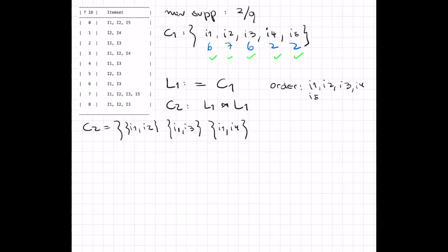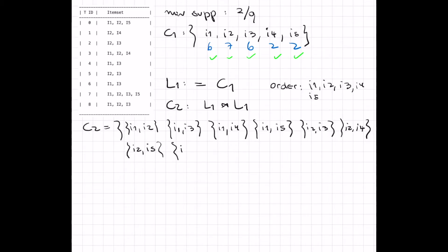So C2 consists of: {I1,I2}, {I1,I3}, {I1,I4}, {I1,I5}, {I2,I3}, {I2,I4}, {I2,I5}, {I3,I4}, {I3,I5}, and {I4,I5}. This is the complete set of candidates of size two.